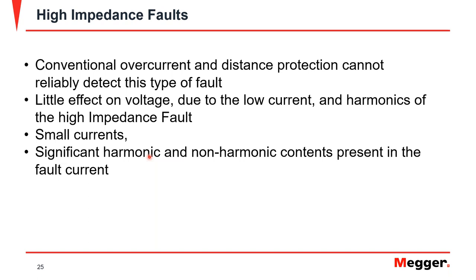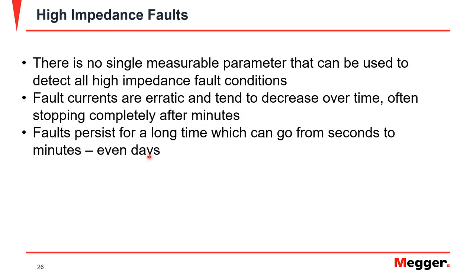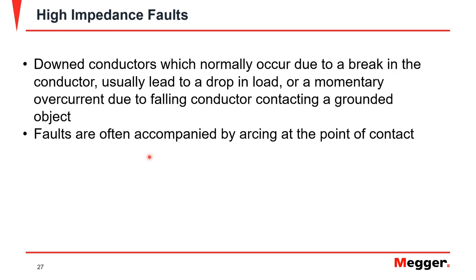High impedance faults are very difficult for conventional overcurrent and distance protection to detect. There is little effect on voltage due to the low current, so voltage cannot be relied upon for detection. The currents are small and contain significant harmonic content, which is sometimes used to detect these faults. There is no single measurable parameter that can detect all types of high impedance fault conditions. Fault currents are erratic and can decrease over time, sometimes stopping completely, yet the fault may persist for seconds or even days.